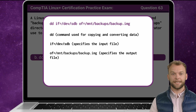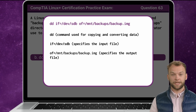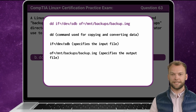Conversely, the of option designates the output file, indicating the destination location where the copied data will be stored. Here, the destination is /mnt/backups/backup.img, which specifies the path to the image file to be created. When executing this command, the system will read the contents of the sdb disk and write them to a file named backup.img located in the /mnt/backups directory.